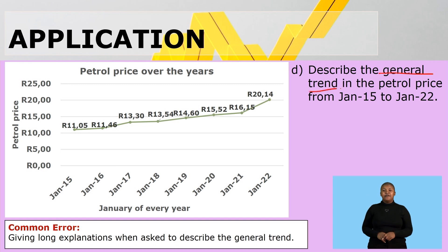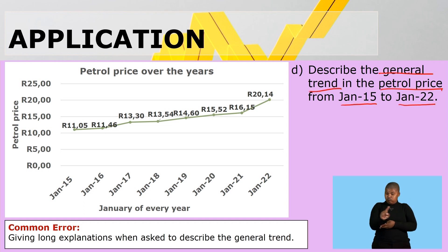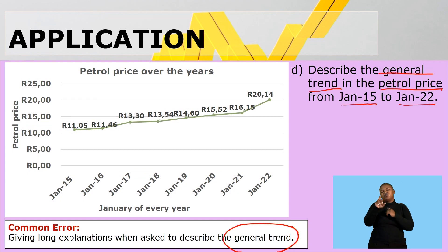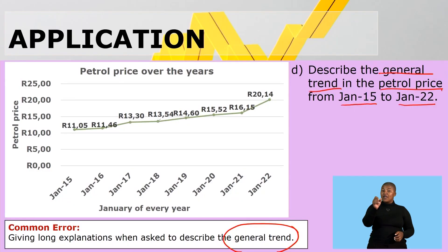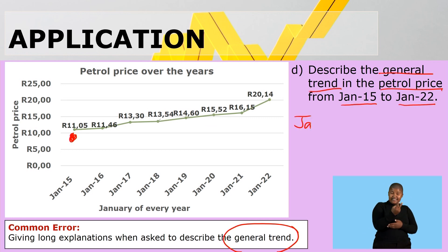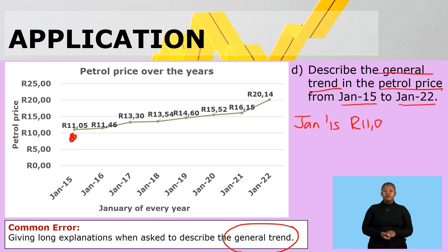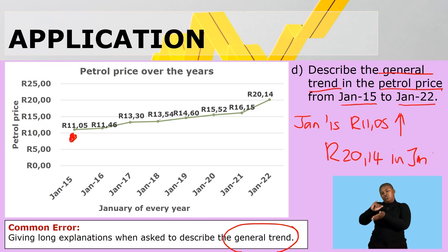Describe the general trend in the petrol price from January 2015 to January 2022. When they ask for a general trend, keep your answer as short as possible — just state whether it is decreasing or increasing in a proper sentence. In this case, you can see that in January 2015 we started with a price of 11 rand 5 cents and it increased to 20 rand 14 in January 2022.